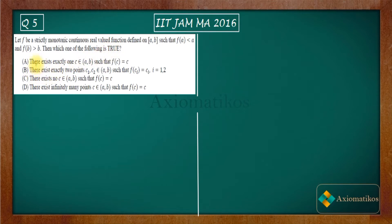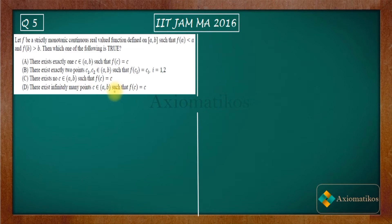Option A says there exists exactly one c in (a, b) such that f(c) = c — this means we are talking about a fixed point. A point from the open interval (a, b) is called a fixed point if f(c) = c. Option B says two fixed points, option C says no fixed point, and option D says infinitely many fixed points.